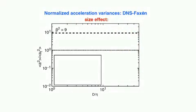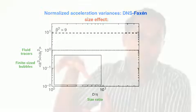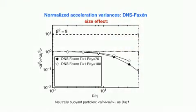Let us look at the effect of finite size. Here you see a plot of the acceleration variance normalized with those of tracer particles versus the size ratio. You would expect in a general sense that as the particle becomes bigger, the acceleration variance goes down. This is what you see for neutrally buoyant particles. This is data from numerical simulations.